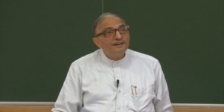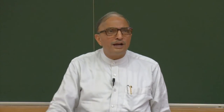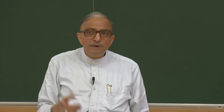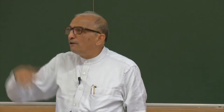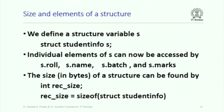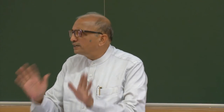Here is a structure for student_info: int roll, char name[30], int batch, float marks. How many bytes does such a structure occupy? 4 + 30 + 4 + 4 = 42, but all compilers insist on allocating memory to components starting at a word boundary — the starting address of any component must be a multiple of four. After the 30-byte name field, the next byte is not a multiple of four, so two padding bytes are added. Consequently, the size works out to 44 bytes, not 42. You can determine the exact size using the sizeof operator: int rec_size = sizeof(struct student_info), which will return 44.